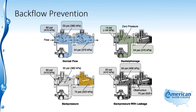The final situation is back pressure with leakage. You can see there's 75 psi on one side and 60 psi being supplied, and there's an obstruction in the check valve. Because the relief valve is open due to this difference in pressure, you'll see leakage dripping to the ground. This is an indication that there's a problem with this check valve assembly because there is leak by.